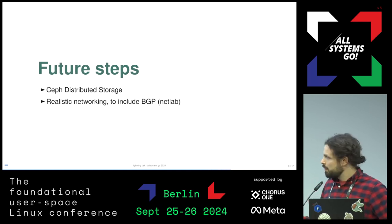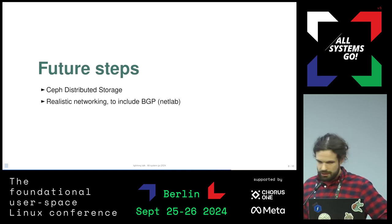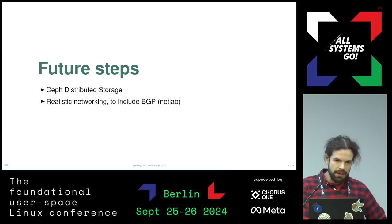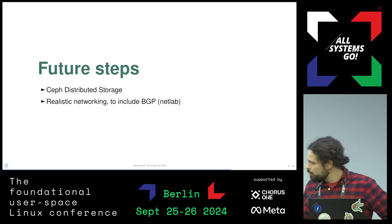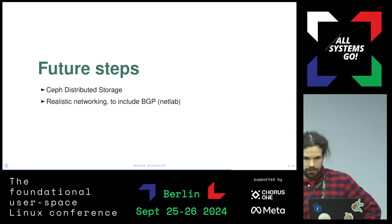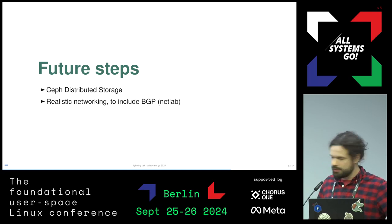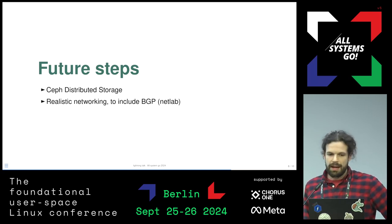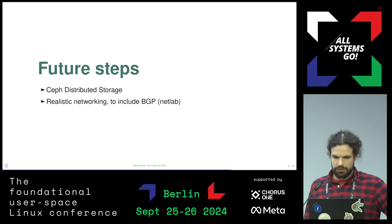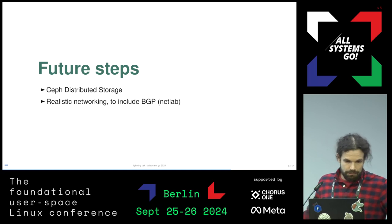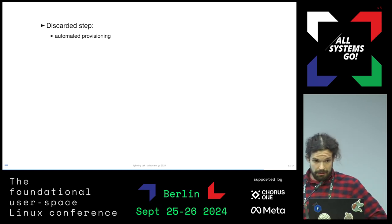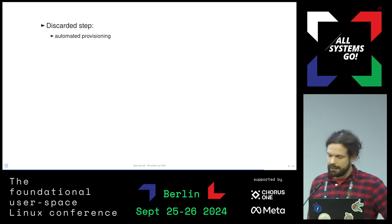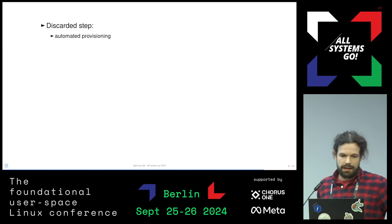For future steps, we want to add self-distributed storage for the whole infrastructure, covering both the HPC side and the Kubernetes side. We also want to move to realistic networking to include BGP in a NetLab fashion — a very interesting open source project where you can create very complex networking infrastructure. One step we discarded is automated provisioning: we tried it but it turned out to be too complex, so we stick to Vagrant boxes.